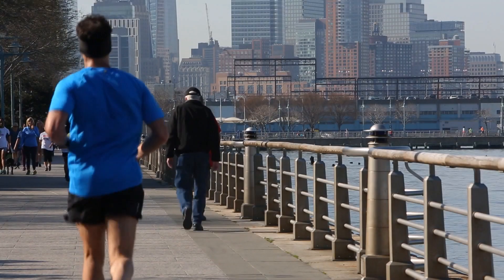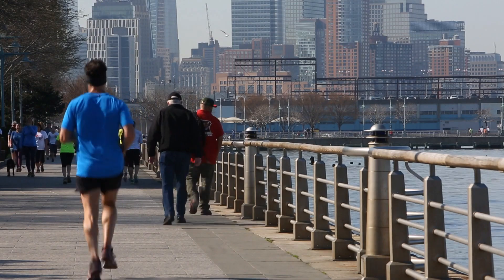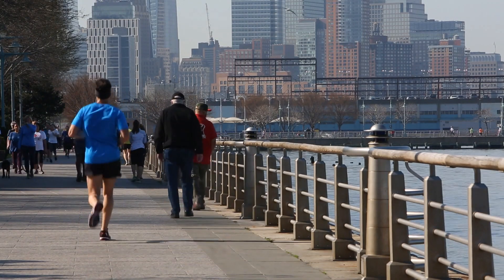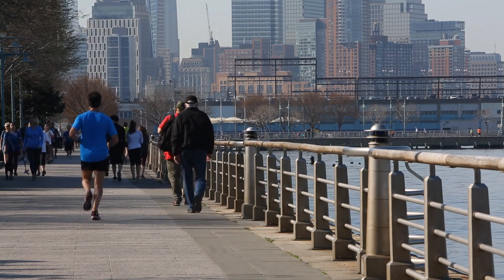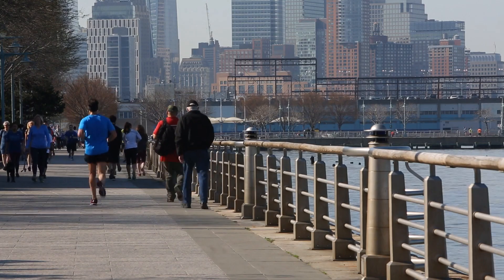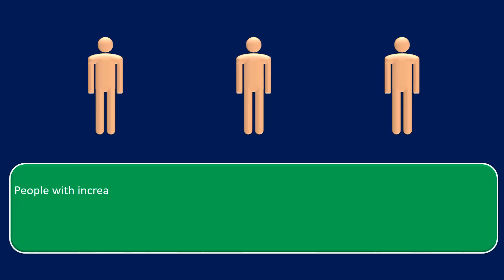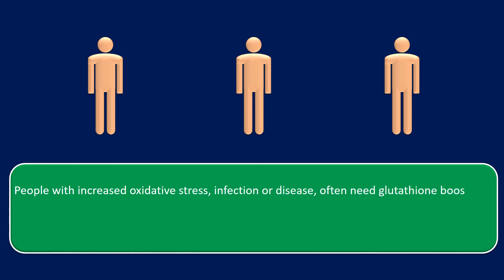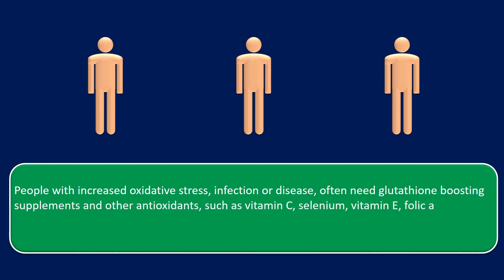Regular physical exercise helps to boost glutathione levels, improves immune function, and brings about a number of health and fitness-related benefits. People with increased oxidative stress, infection, or disease often need glutathione-boosting supplements and other antioxidants, such as vitamin C, selenium, vitamin E, folic acid, vitamin B6, and vitamin B12, which also help recovery and improve health.